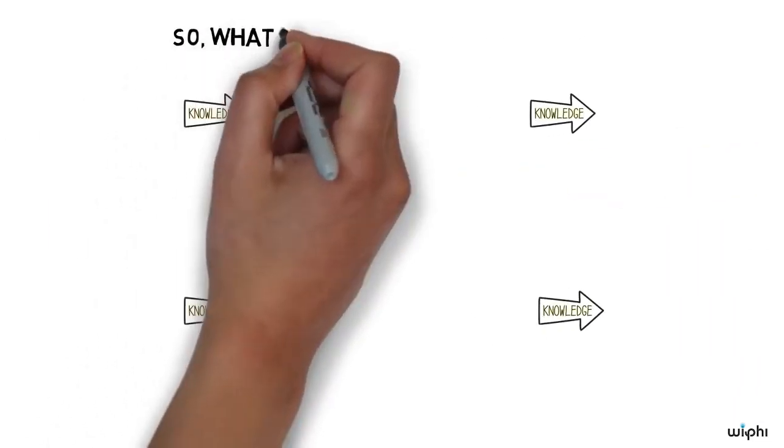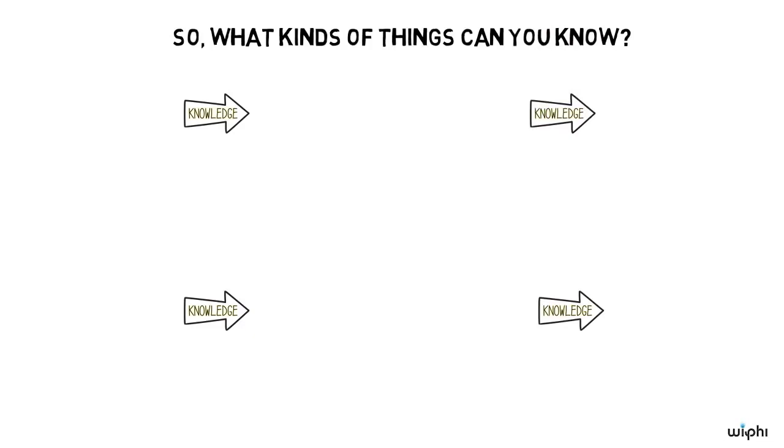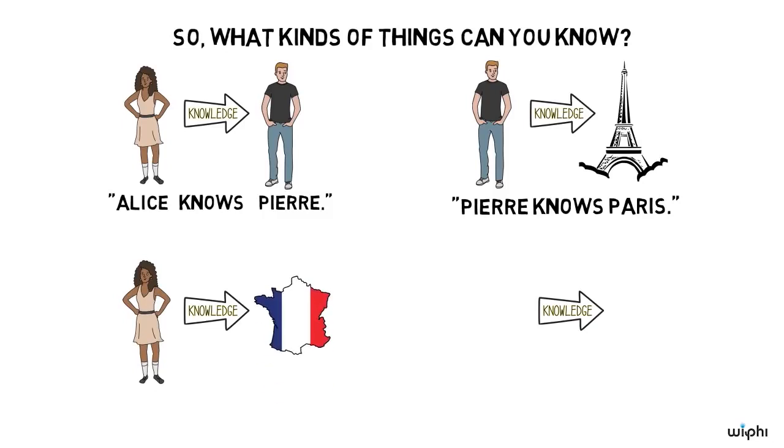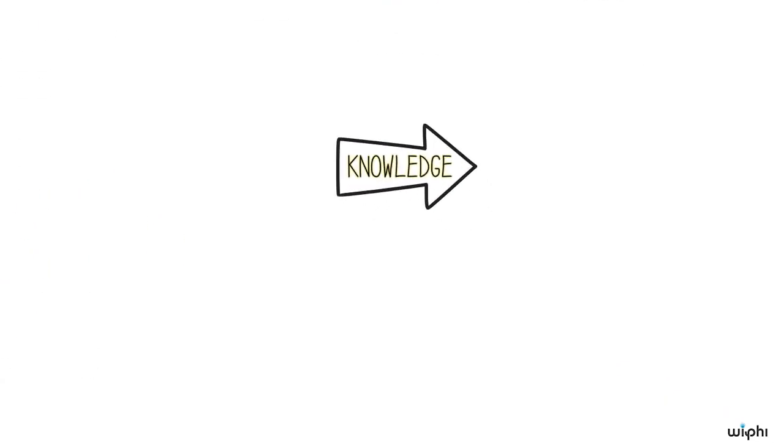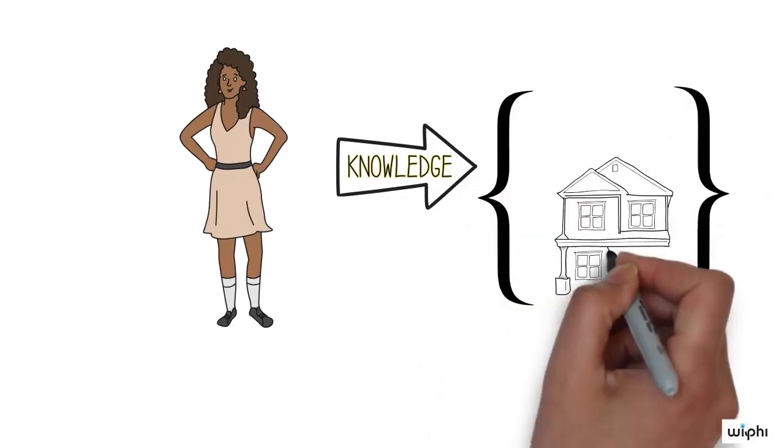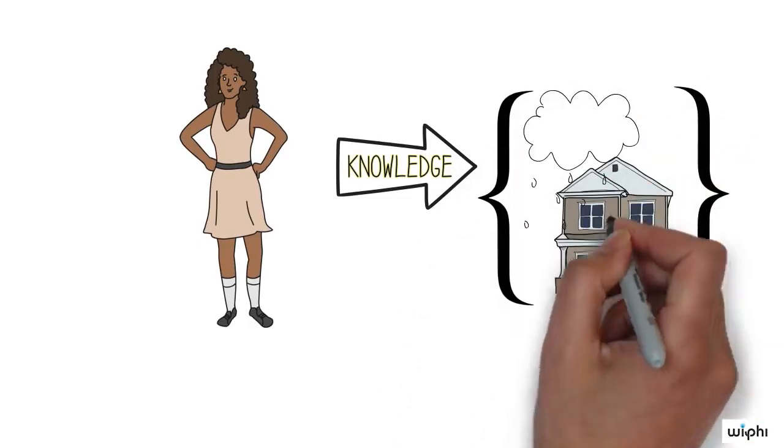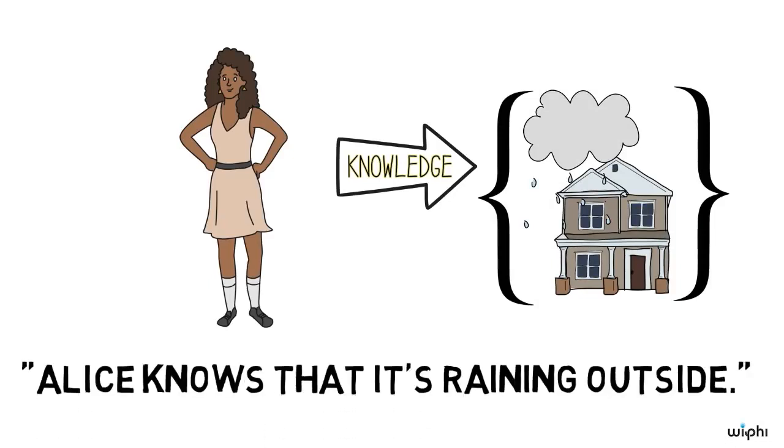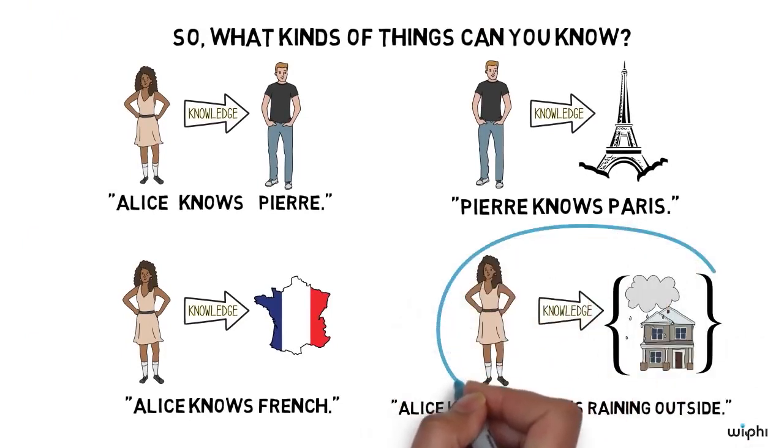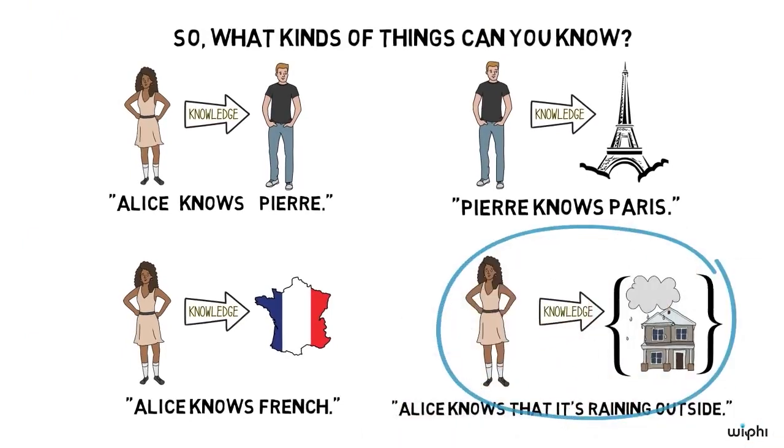So what kinds of things can you know? The English verb know is used in several ways. You can know a person, Alice knows Pierre. A place, Pierre knows Paris. Or a language, Alice knows French. But the most common way of using the verb to know is the way we use it when we're speaking of someone knowing a fact. As in, Alice knows that it's raining outside. In this series, we'll be focusing on this knowing a fact sense of the verb to know.